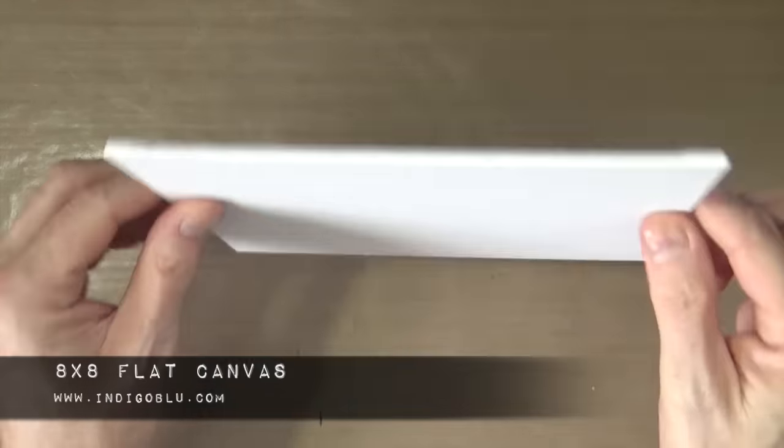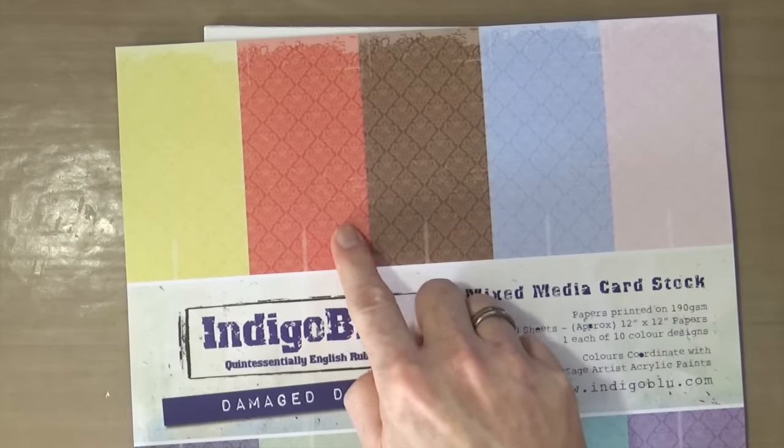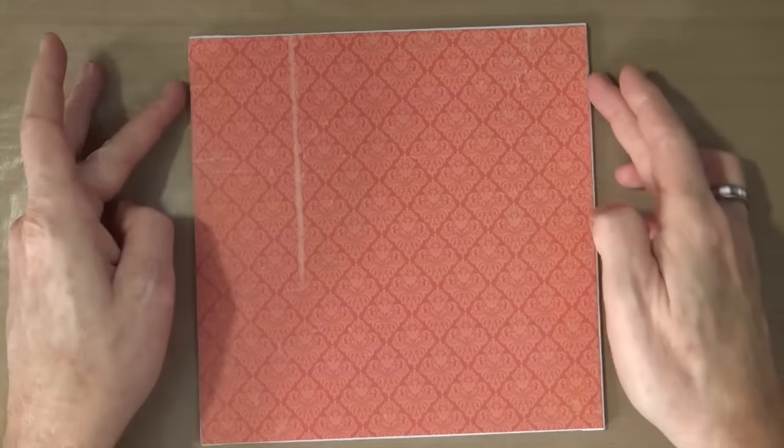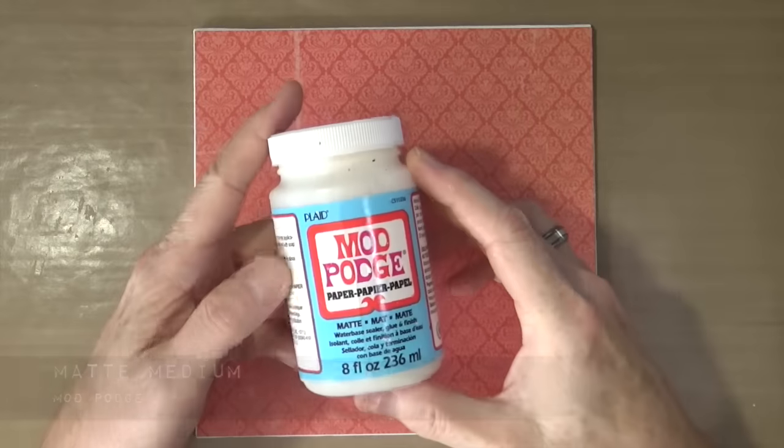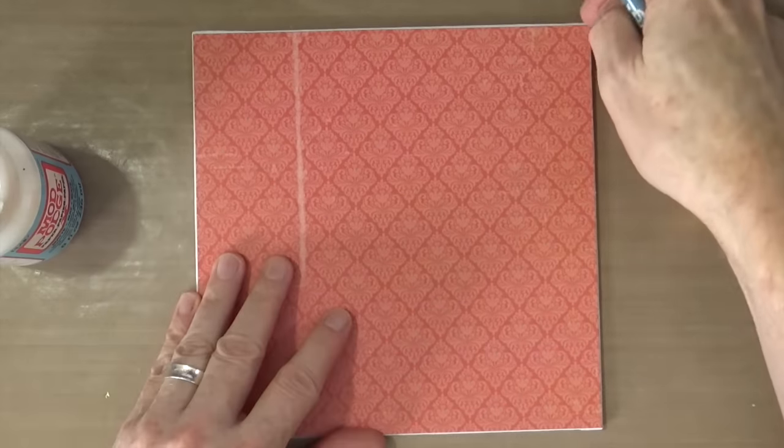For today's project, I'm going to be working on an 8x8 flat canvas. I'm also going to be using the damaged damask mixed-media cardstock, using the burning bonfire orange damask paper which I've already cut to the same size as my canvas. I'm going to glue the entire piece down using the matte medium from Mod Podge.